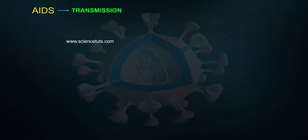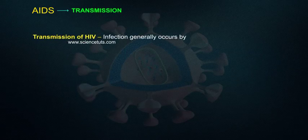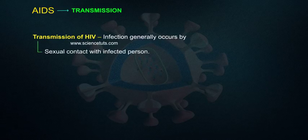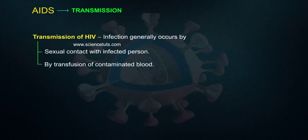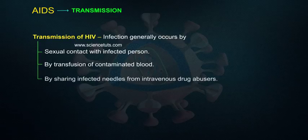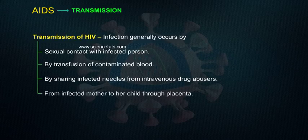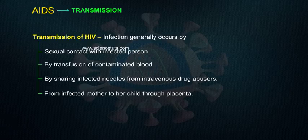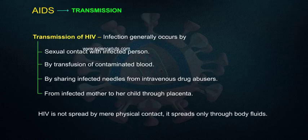Transmission: Transmission of HIV infection generally occurs by sexual contact with an infected person, by transfusion of contaminated blood, by sharing infected needles from intravenous drug abusers, from an infected mother to her child through the placenta. HIV is not spread by mere physical contact; it spreads only through body fluids.